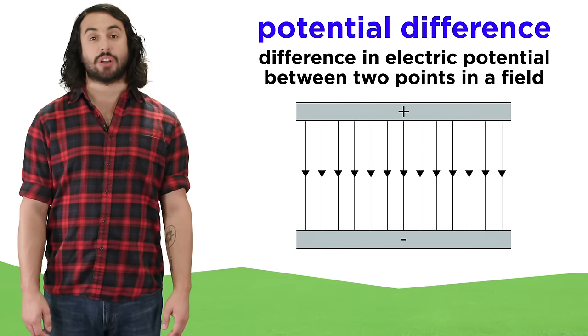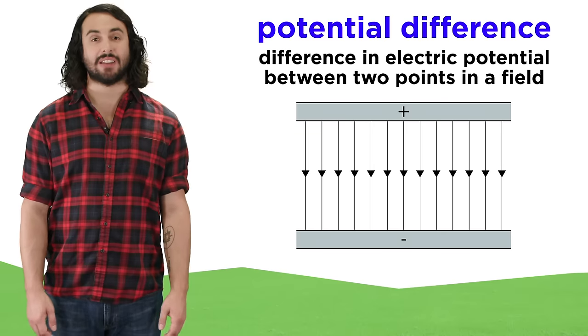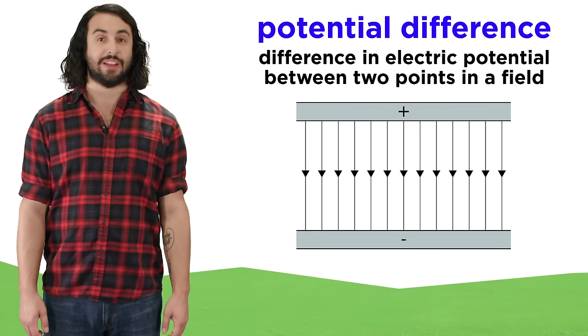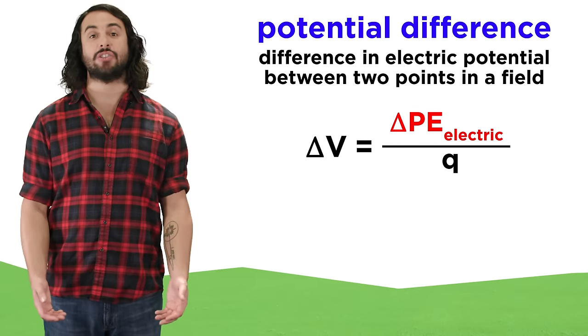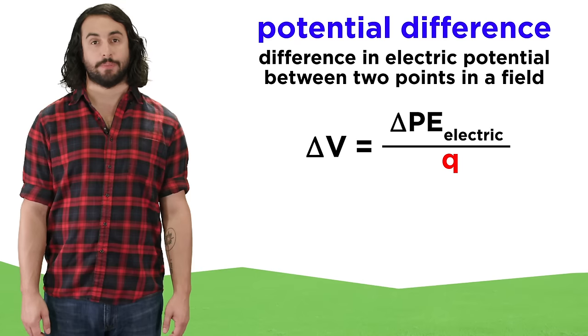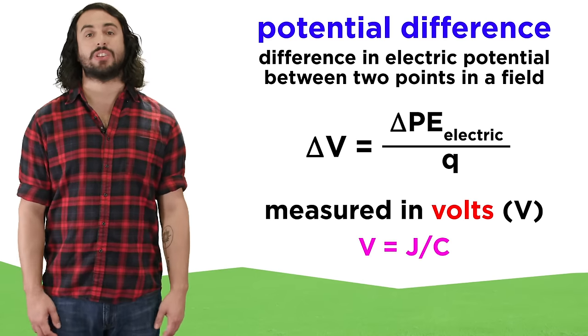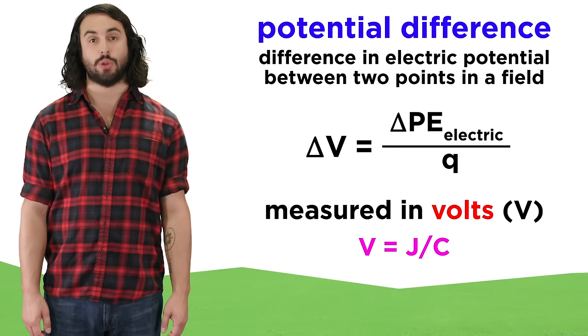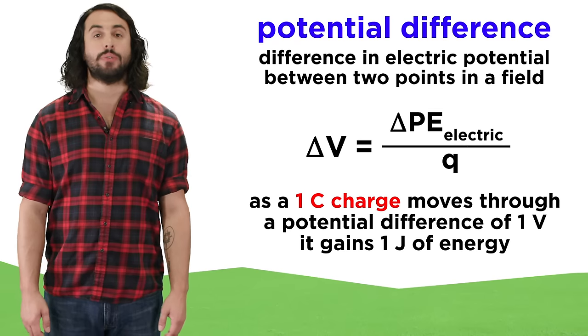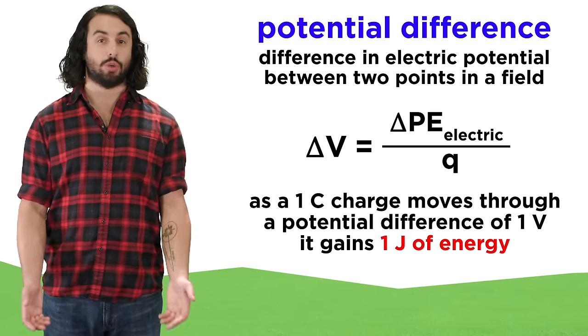This leads to the concept of potential difference, which is the difference in electric potential between two points in an electric field, expressed as the change in electrical potential energy over electrical charge. The SI unit for potential difference is the volt, which is equivalent to one joule per coulomb. This means that as a one coulomb charge moves through a potential difference of one volt, it gains one joule of energy.